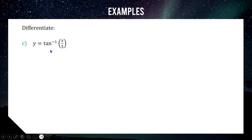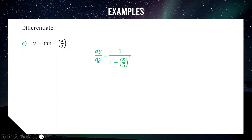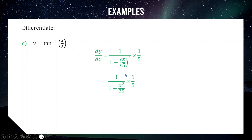On to question c: the derivative of tan inverse of x over 5. Starting with 1 over 1 plus (x/5) squared — our usual derivative for tan inverse with x replaced by x over 5. We also multiply by the derivative of the inner function x over 5, which is one fifth. That gives us 1 over 1 plus x squared over 25, multiplied by one fifth. Multiplying through: the denominator becomes 1 plus x squared over 25, and multiplied by 5 gives 5 plus x squared over 5.